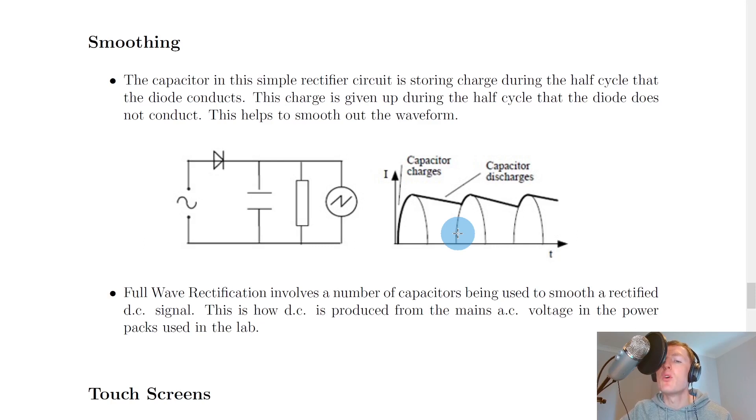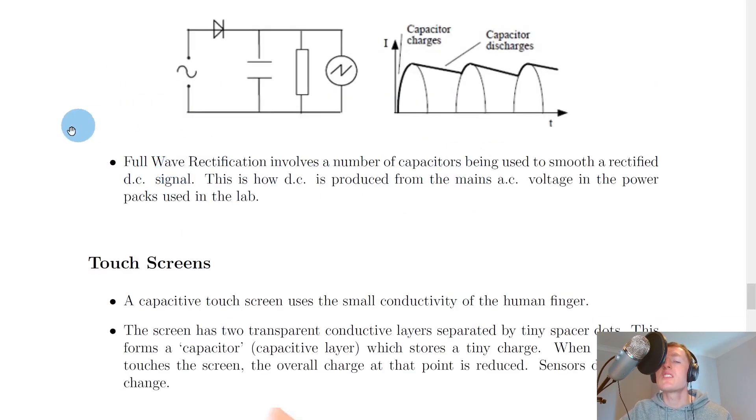Full wave rectification involves a number of capacitors being used to smooth a rectified DC signal. This is how DC—direct current—is produced from the mains AC alternating current voltage in the power packs used in the lab.